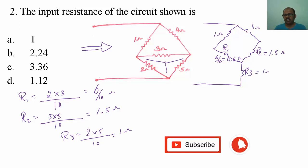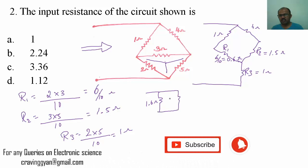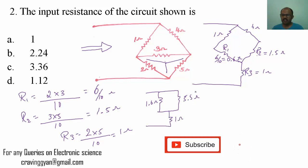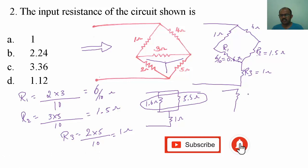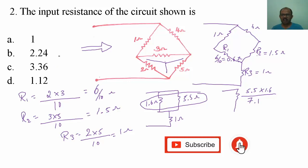R3 equals 1 ohm. This 1 ohm and 0.6 ohm are connected in series, giving an equivalent of 1.6 ohms. I also have two more resistors: 5.5 ohms in series with a 1 ohm resistor. These two branches are then connected in parallel. The equivalent resistance is 5.5 multiplied by 1.6 divided by 5.5 plus 1.6, which equals 7.1 in the denominator. Since the options are far apart, I calculate roughly.